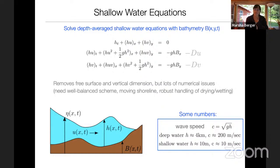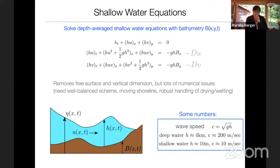Here are some important numbers. The wave speed for this hyperbolic system is C equals the square root of gH. In deep ocean water — say H is about 4 kilometers and g is about 10 m/s² — the speed is about 200 meters per second. That's how fast the tsunami travels. In shallower water, say 10 meters deep, the tsunami moves at a much slower speed of about 10 meters per second. We'll see those numbers come up later.